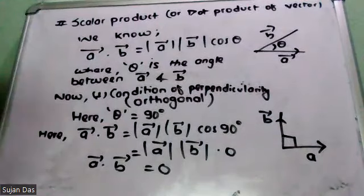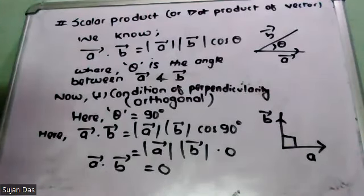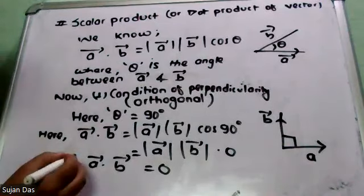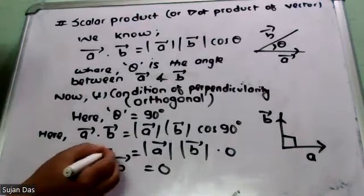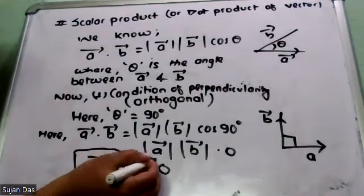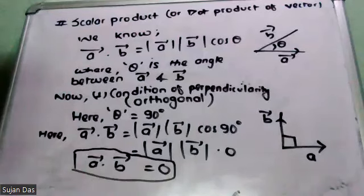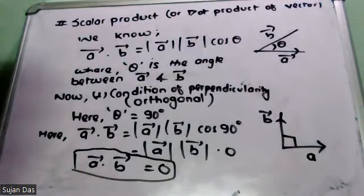So vector A dot vector B equals 0. Therefore they are perpendicular. If the dot product of two vectors is 0, then they are perpendicular.